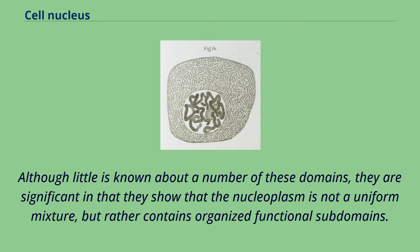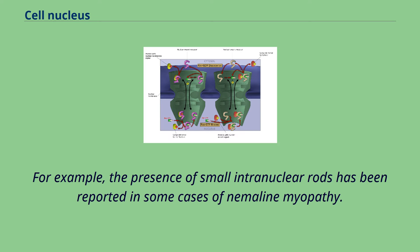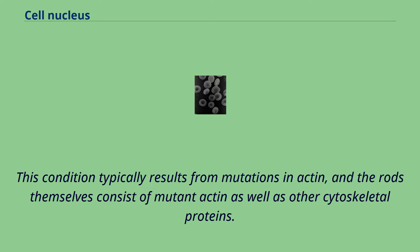Other subnuclear structures appear as part of abnormal disease processes. For example, the presence of small intranuclear rods has been reported in some cases of nemaline myopathy. This condition typically results from mutations in actin, and the rods themselves consist of mutant actin as well as other cytoskeletal proteins.